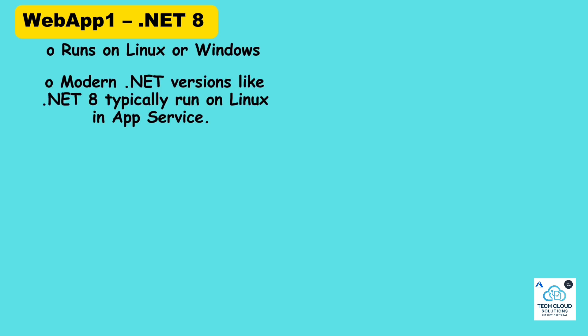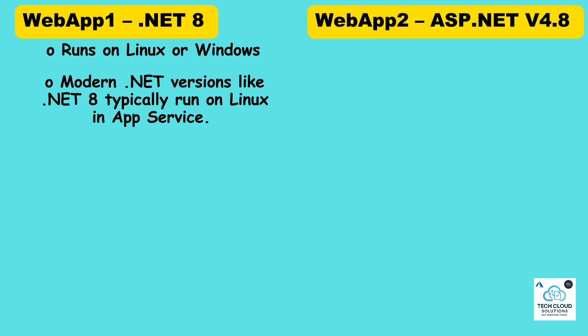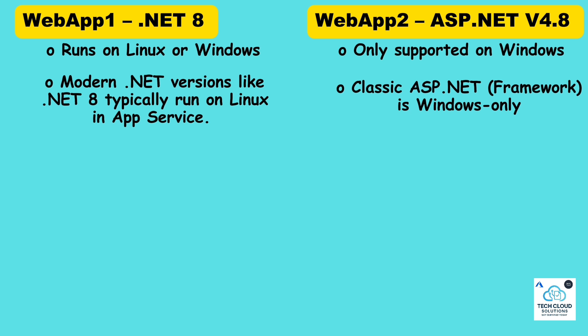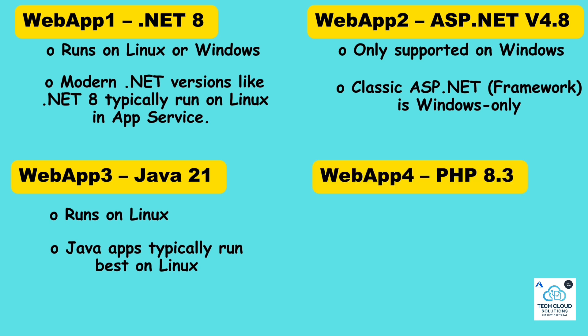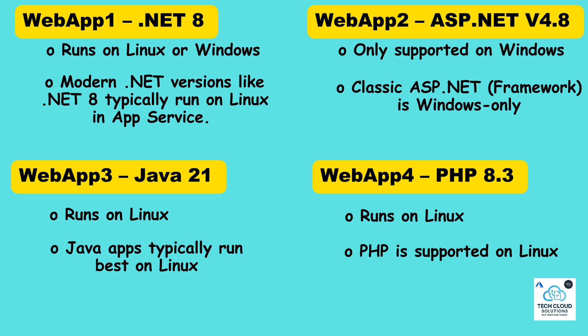Let's examine each web app. Web App 1: .NET 8 — runs on Linux or Windows; modern .NET versions like .NET 8 typically run on Linux in App Service. Web App 2: ASP.NET v4.8 — only supported on Windows; classic ASP.NET Framework is Windows only. Web App 3: Java 21 — runs on Linux; Java apps typically run best on Linux. Web App 4: PHP 8.3 — runs on Linux; PHP is supported on Linux.